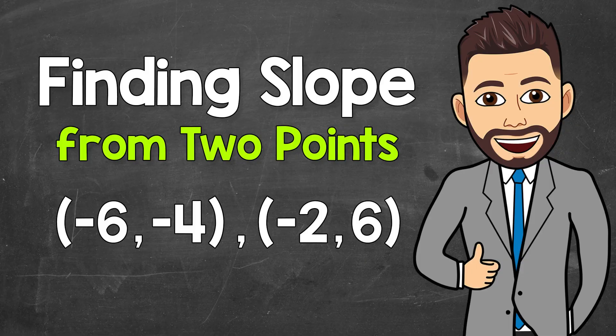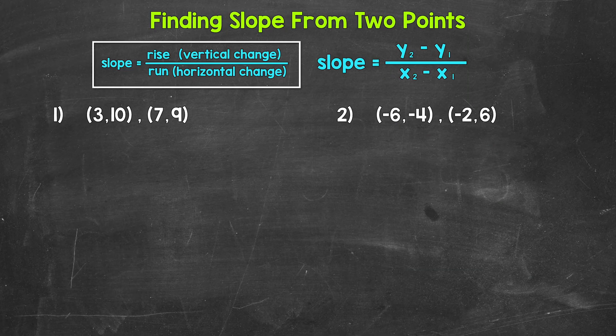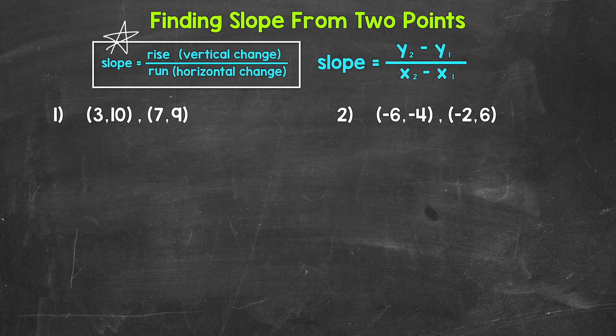Welcome to Math with Mr. J. In this video, I'm going to cover how to find the slope of a line from two points on the line. Now remember, slope measures the steepness of a line, so how much it moves up or down from left to right. And slope equals rise over run, so the vertical change over the horizontal change.